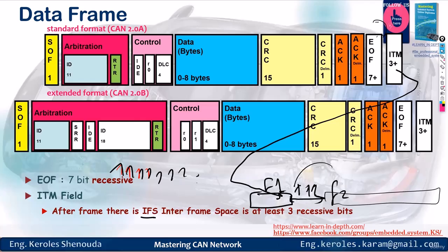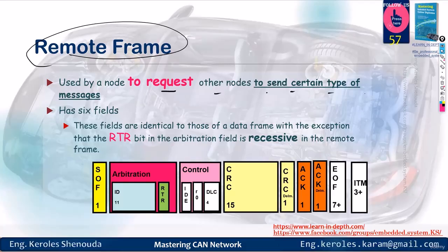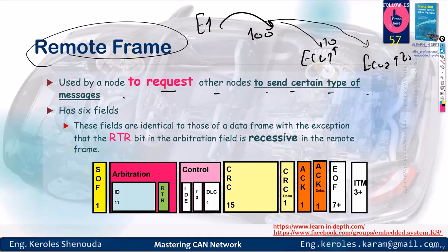I've explained the data frame. Now, let's move on to the remote frame. The remote frame is used by a node to request other nodes to send certain types of messages. What does this mean? It means that ECU1 sends a remote frame with ID 100. As if it's saying, hey, whoever sends with ID 100, send it to me. So, if I have ECU2 sending with an ID of 10 and ECU3 sending with an ID of 100, both of them, upon seeing this as a remote frame, will receive it. They'll check in the software and find that this remote frame wants a response based on its ID, which is 100.